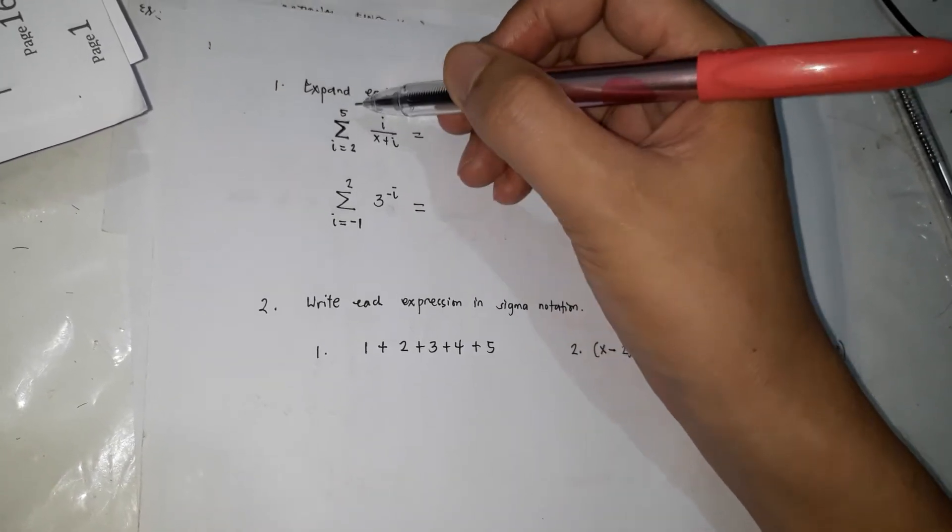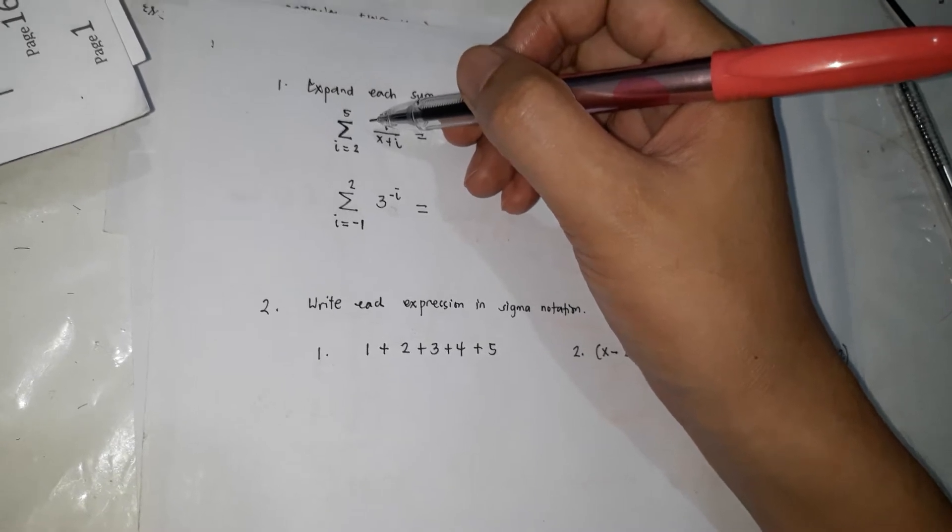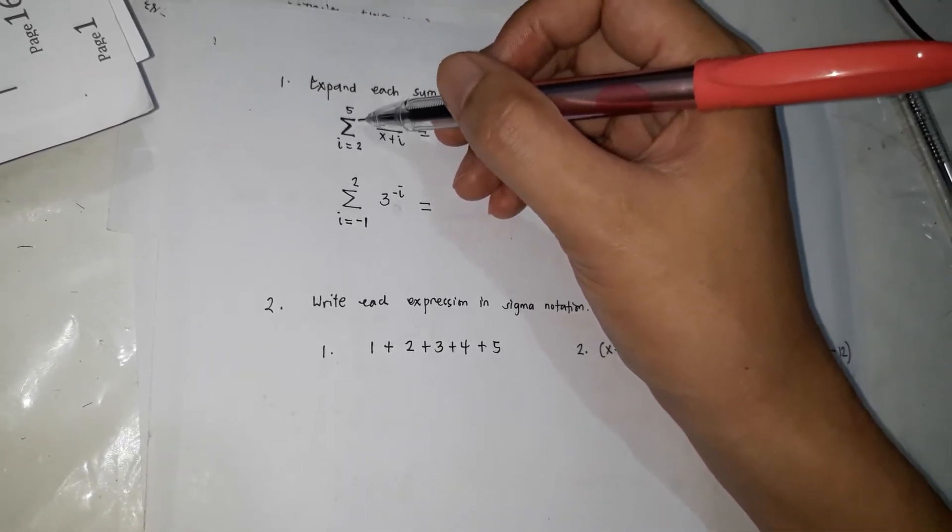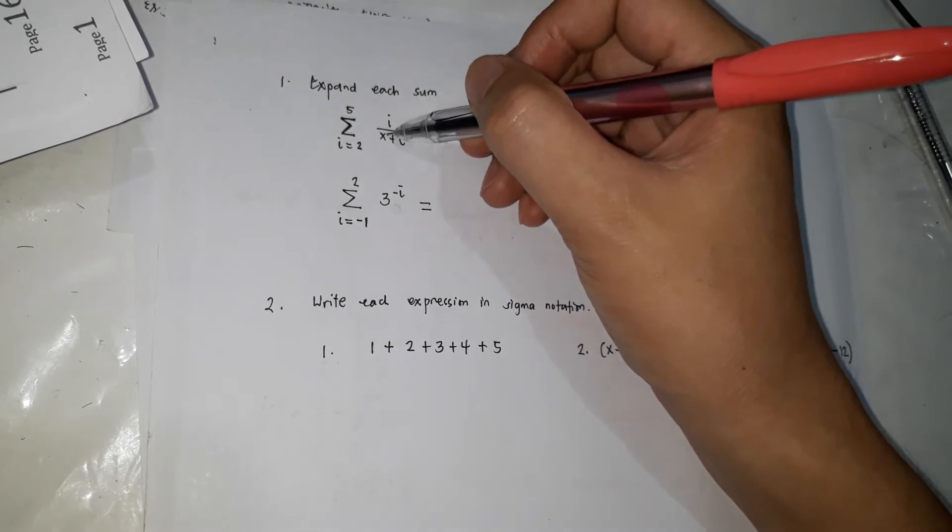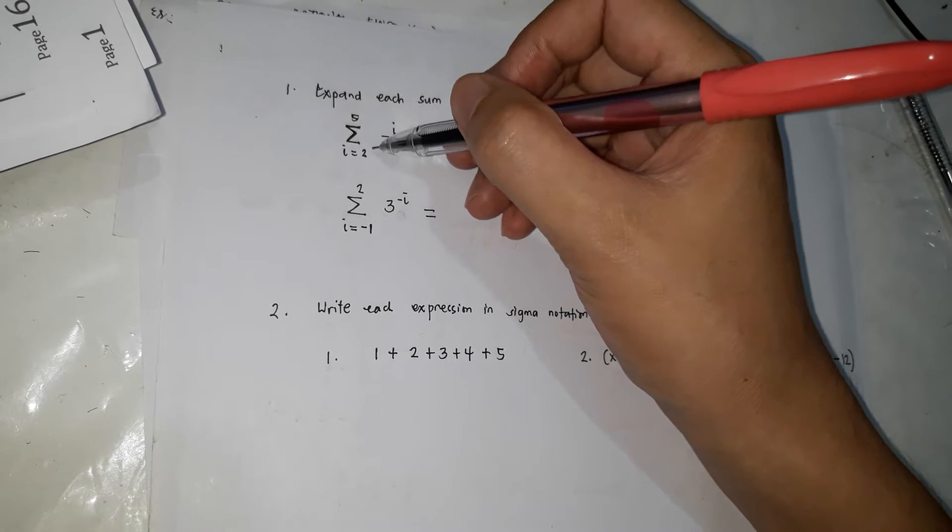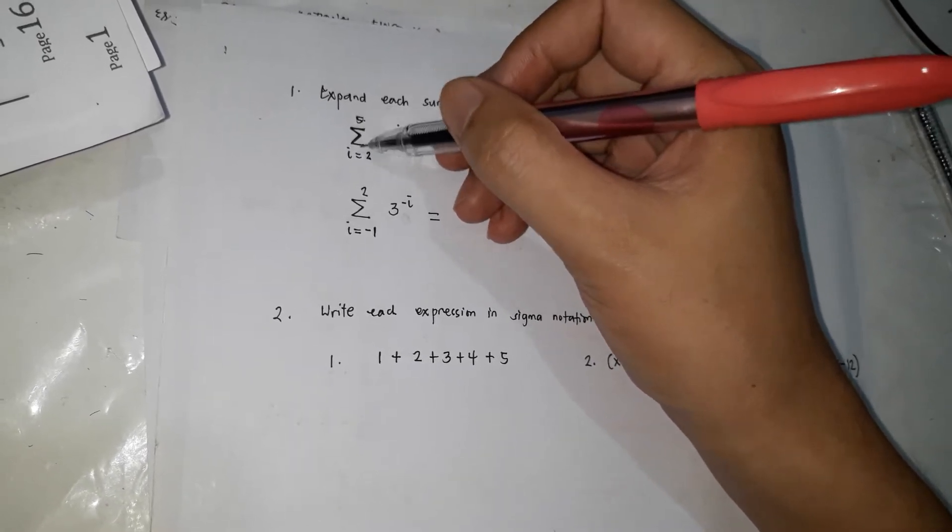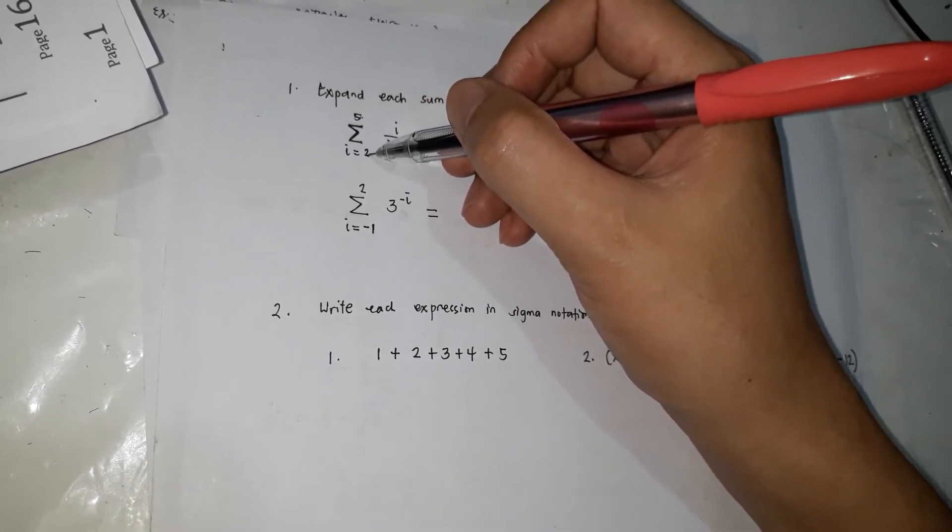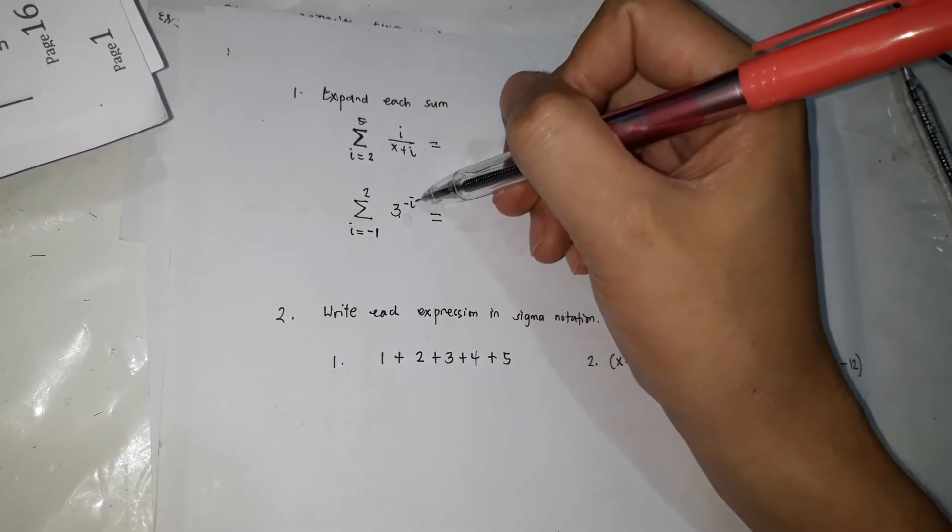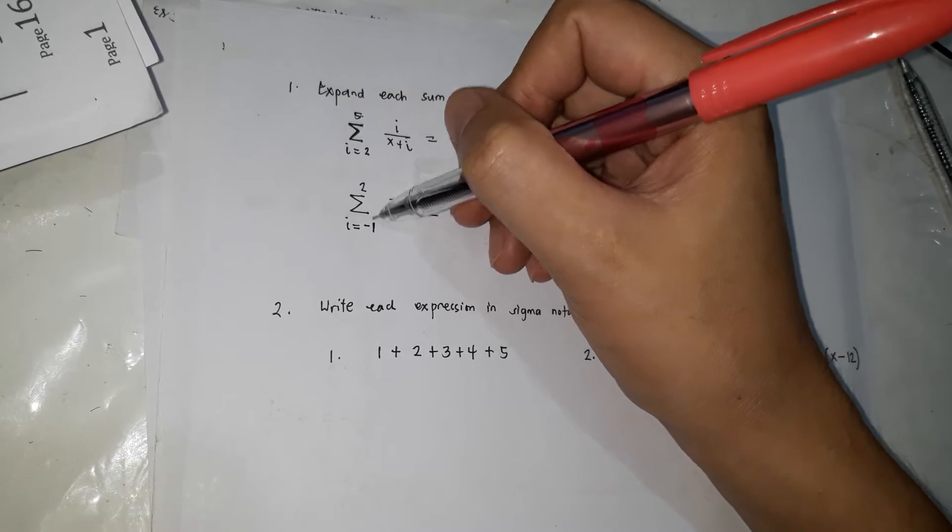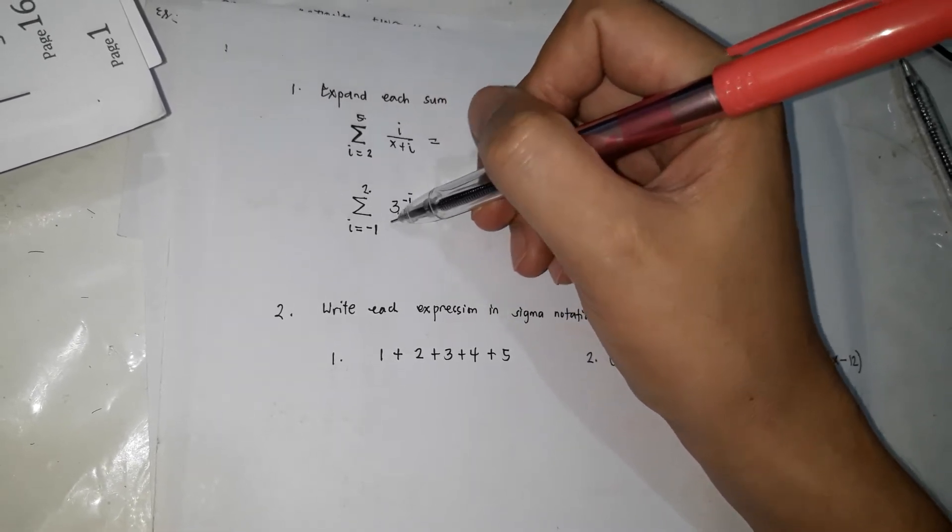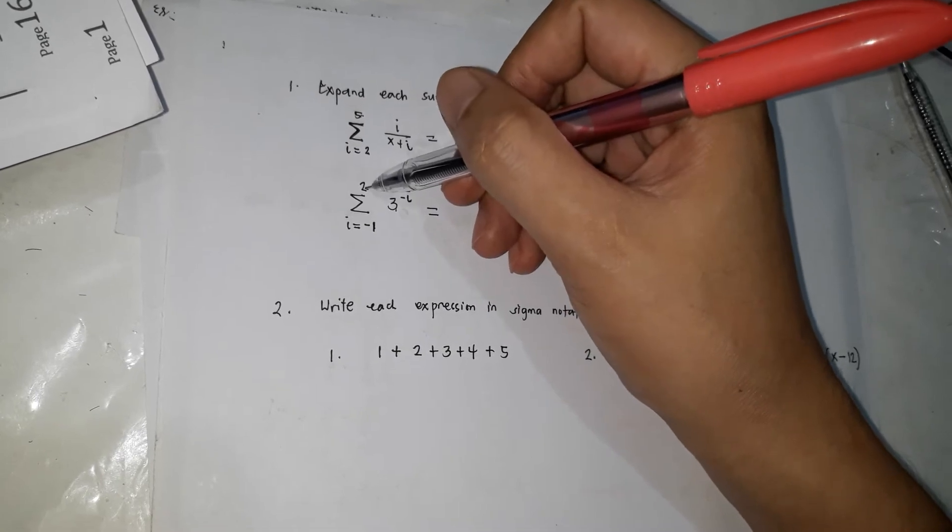So this is the formula for a series. It is read as the summation of i over x plus i from 2 to 5. Ibig sabihin galing sa 2 hanggang sa 5. The values of i are galing sa 2 hanggang sa 5. For this one, the summation of 3 to the negative i from negative 1 to 2. Ibig sabihin the values of i are from negative 1 to 2.